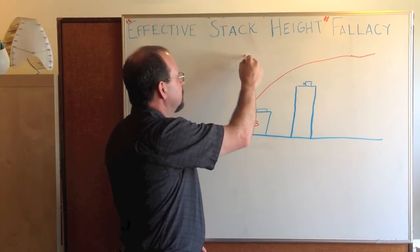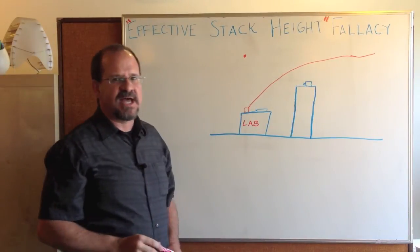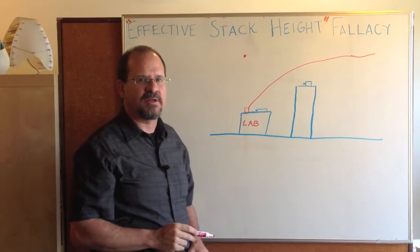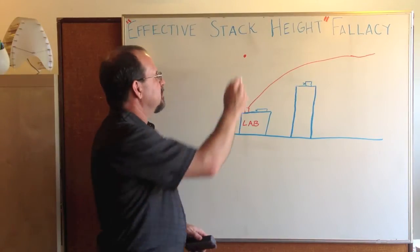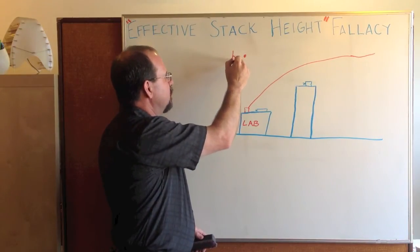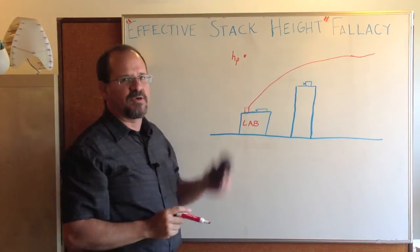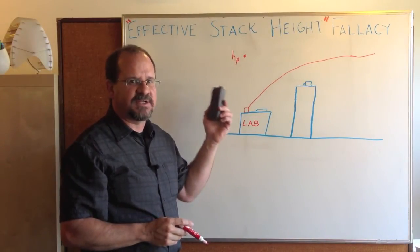You then pretend that it happens right above the stack and continue to make adjustments to figure out what the air quality is at your building. This point is known as the effective plume height, but it has morphed over time, in some cases to be called effective stack height.